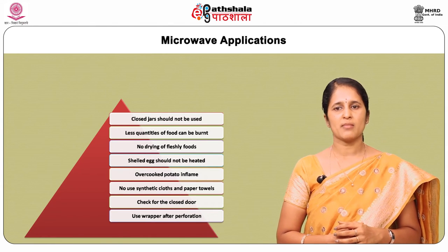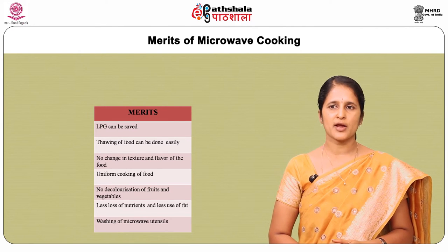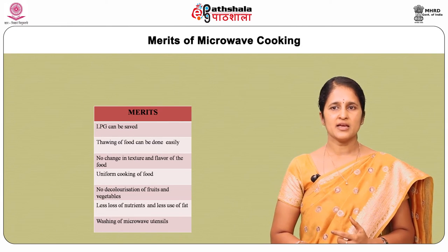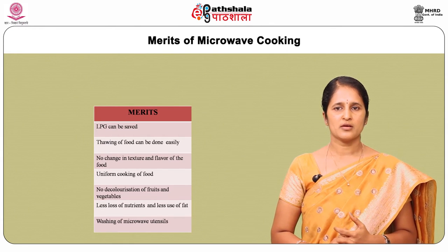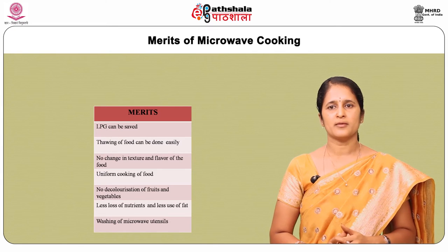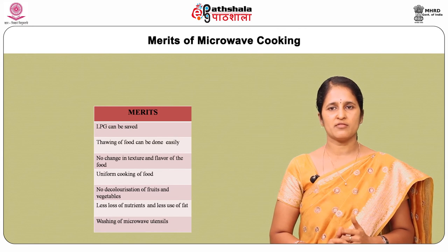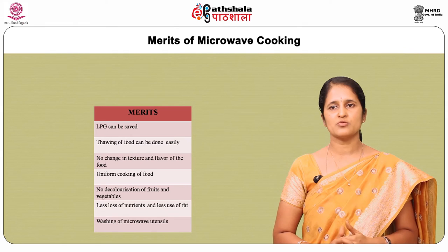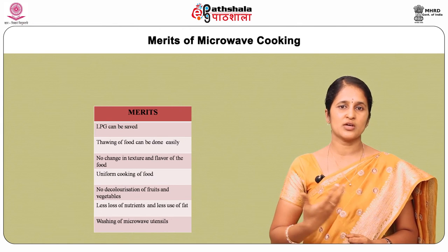Advantages of using microwave oven: time is saved as it cooks food very fast. Thawing of food can be done easily without wasting time. There is no change in texture and flavor of the food, and cooking is uniform. No decolorization of fruits and vegetables. Loss of nutrients, especially water-soluble vitamins like vitamin B and C, is minimized. It consumes less fat, and washing of microwave utensils is very easy because food does not stick to the utensil.